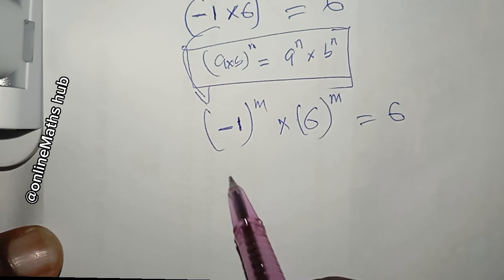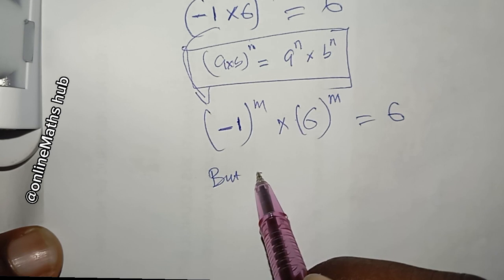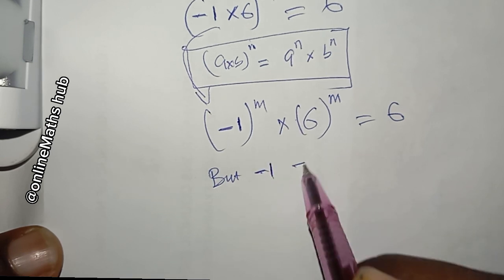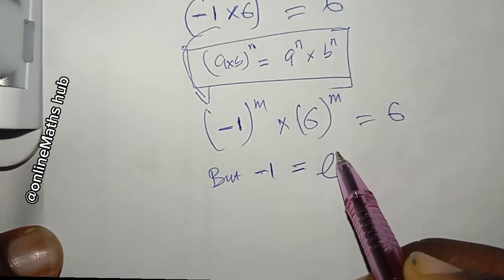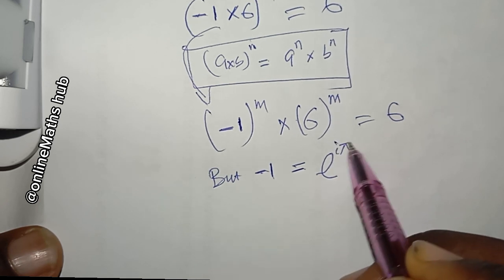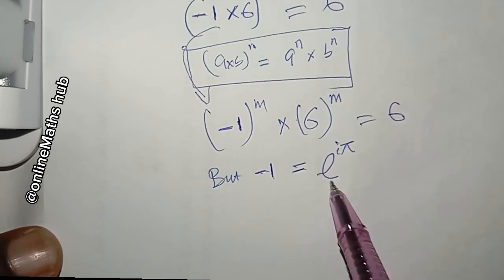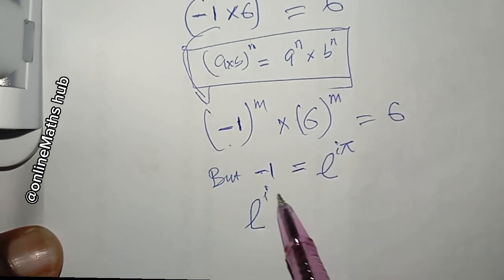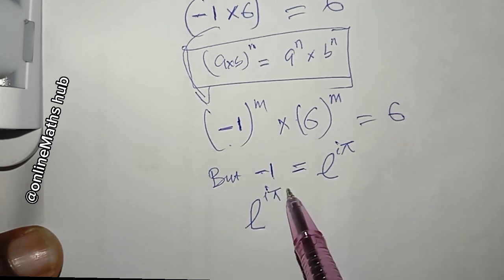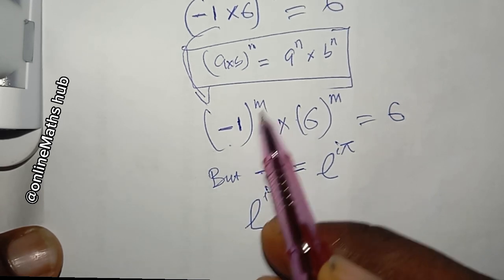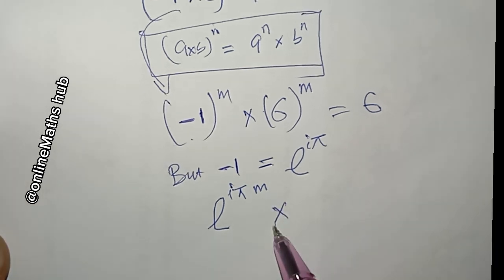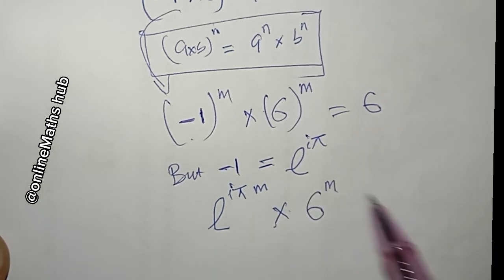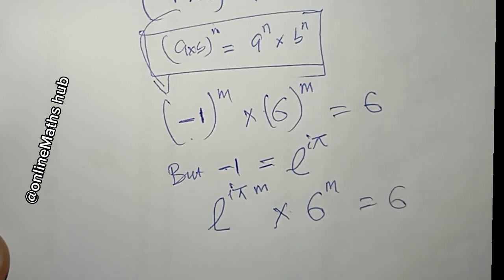Moving on, I can write negative 1 in exponential form as e to the power i·π. So replacing that here, I have e to the power i·π, and raising that to the power m, multiplied by 6 to the power m, equal to 6.